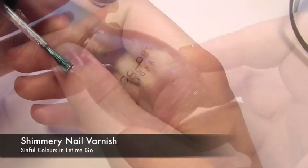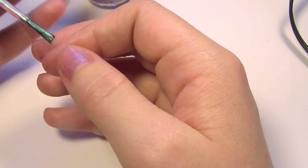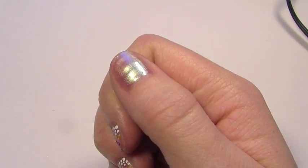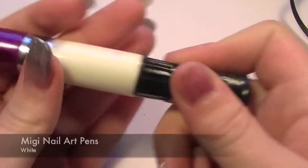So first thing you want to do is apply a really light shimmery nail polish. Now this is quite sheer so you're going to want to apply about two coats. This can be any color you want but I just chose this particular one.